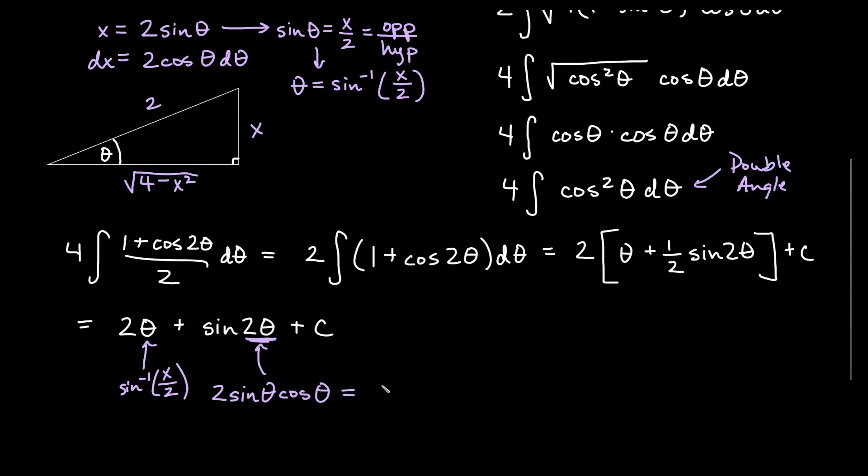That is going to be 2 times sine theta. We know what sine theta is. It was x over 2. And then cosine theta, if we're not sure, we can always look at the triangle and see what cosine theta is. Cosine is the adjacent over the hypotenuse, so that will give me this square root here over the hypotenuse of 2.